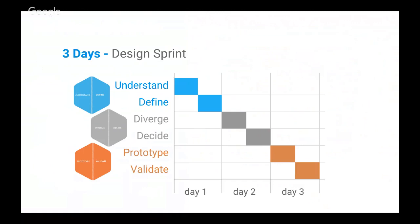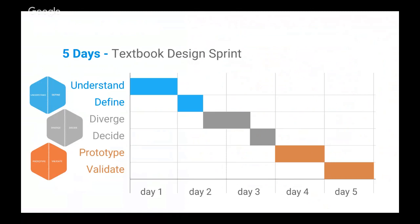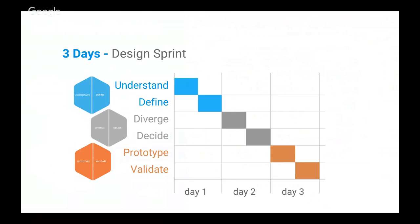You can compress a design sprint by bringing many activities into single days. Another way is to cut off the prototyping and validation phase and do that at another time. But you need to be very careful — at the end of the diverge and decide time, everyone's very motivated, and it's very easy to lose steam if you say 'we'll prototype next week and talk to users two weeks after that.' If you cut it down, you need to make sure that the real value — the prototyping and validation — actually happens. There's even a one-day design sprint model proposed. I've never tried it, but apparently it's possible.